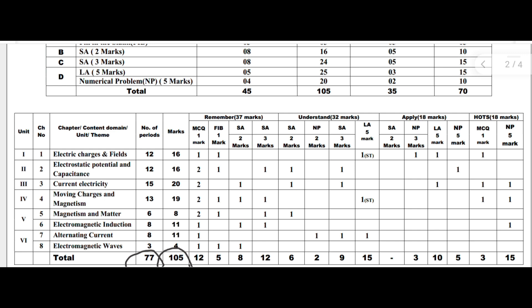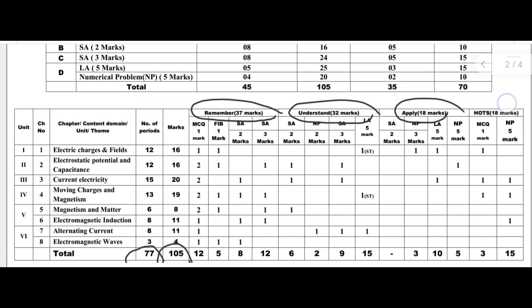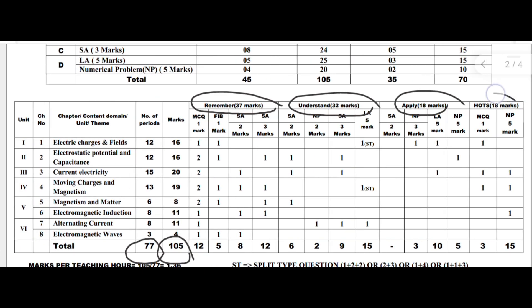The question paper consists of three types of patterns: remembrance 37 marks, understanding 32 marks, and applying 18 marks. This corresponds to easy, medium, and difficult levels respectively.